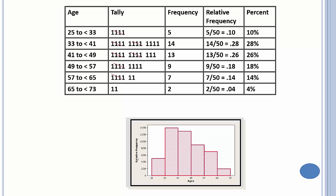You also could have made just a frequency histogram where the heights would be 5, 14, 13, and so on. And strangely enough, or maybe not strangely enough, the histogram would have the exact same shape.